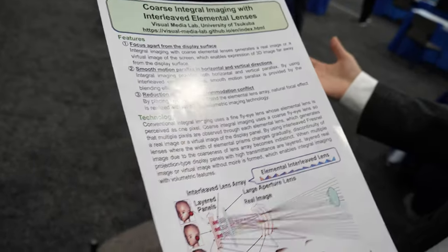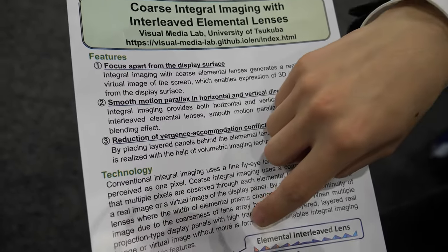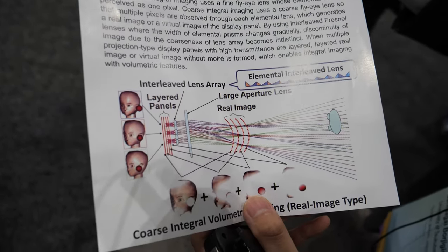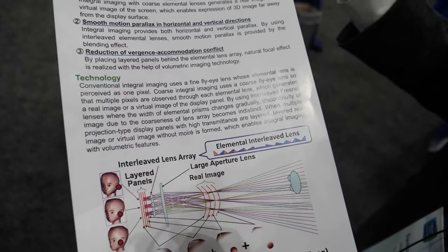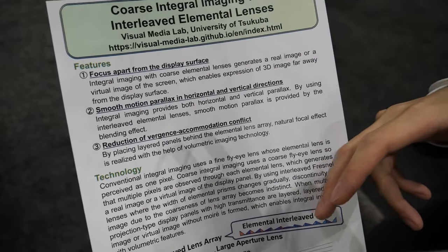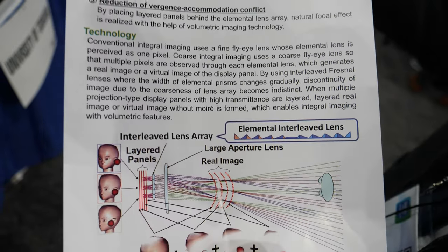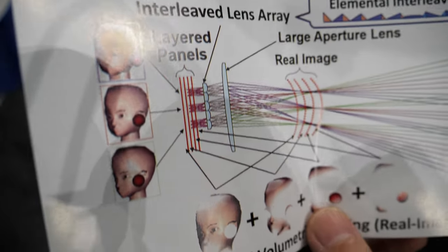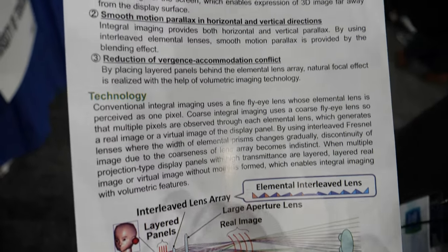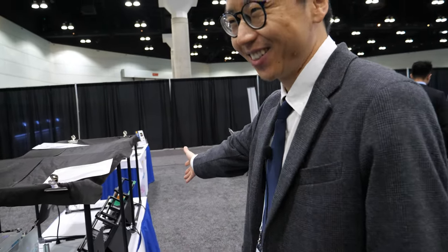Integral imaging is an old technique but still attractive. The key innovation in our demonstration is the elemental interleaved lens design. In a normal Fresnel lens array the lenses are very distinct. Our new design interleaves the prisms so light is mixed and the lens boundaries become less distinct. This gives us better image quality — especially for the real image device, the transition between views is much smoother.